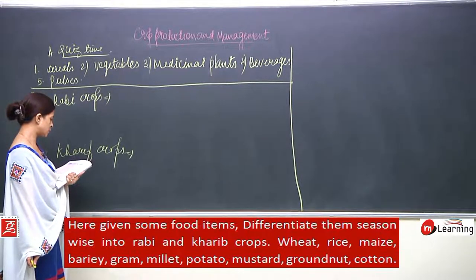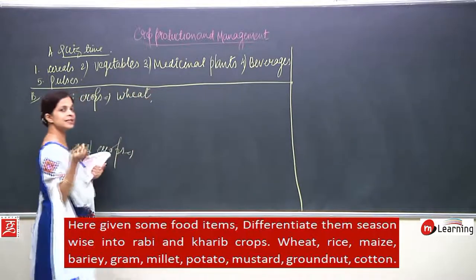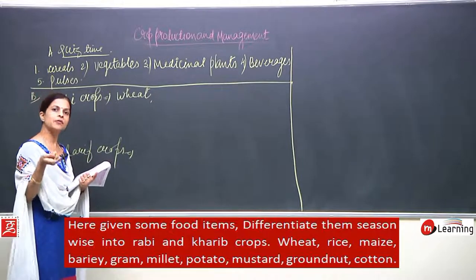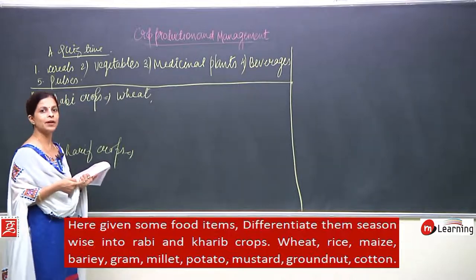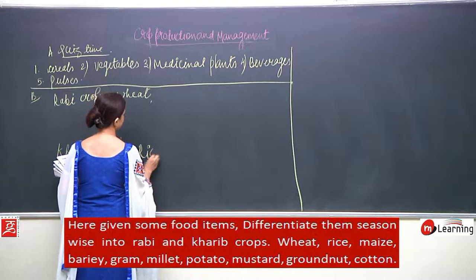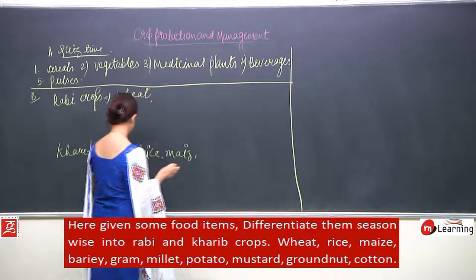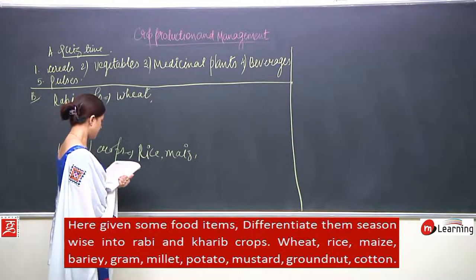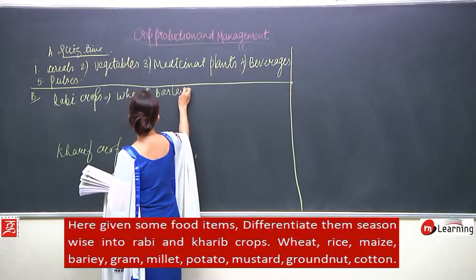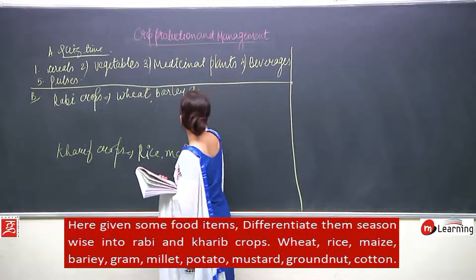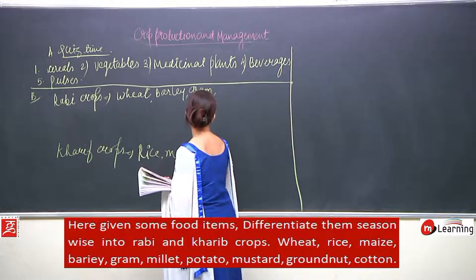First, wheat — wheat goes in Rabi crop. Then rice/paddy — it is a Kharif crop. Maize needs water so it is also a Kharif crop. Then barley — barley is a Rabi crop. Gram, which we just studied, is also a Rabi crop. Then millet — it is a Kharif crop.